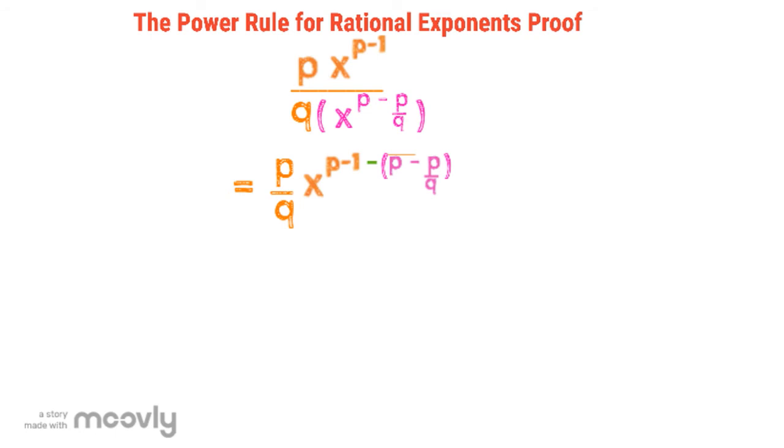And now we take the p over q out and subtract the exponents of our x's. Then we distribute the negative sign, which gives us minus p plus p over q, and the p's cancel out.